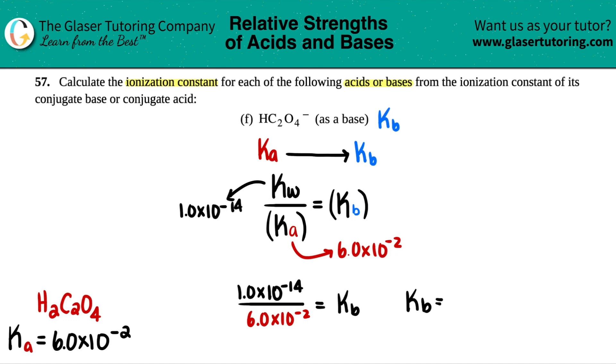1.0 times 10 to the negative 14th divided by 6.0 times 10 to the negative 2nd. So Kb equals, let's see, calcys out. 1 times 10 to the negative 14th divided by 6 times 10 to the negative 2nd.